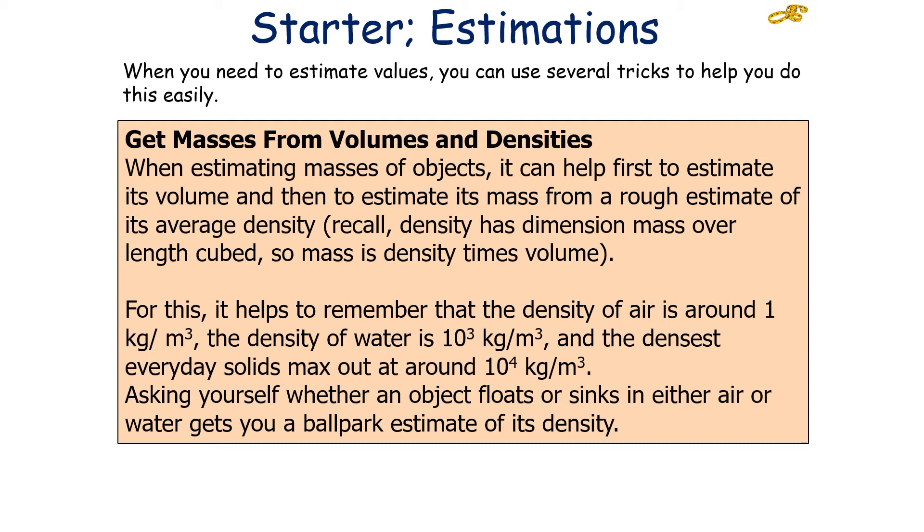The next trick you can do is get masses from volumes and densities. When estimating masses of objects, it can help first to estimate its volume, and then to estimate its mass from a rough estimate of its average density. Recall, density has a dimension mass over length cubed, so mass is density times by volume. For this, remember it helps that the density of air is about 1 kg per meter cubed, the density of water is about 10 to the 3 kg per meter cubed, and the density of everyday solids max out at around 10 to the 4 kg per meter cubed. Asking yourself whether an object floats or sinks in either air or water can get you a ballpark estimate of your density, and therefore you can work out the mass as an estimation very quickly from that.